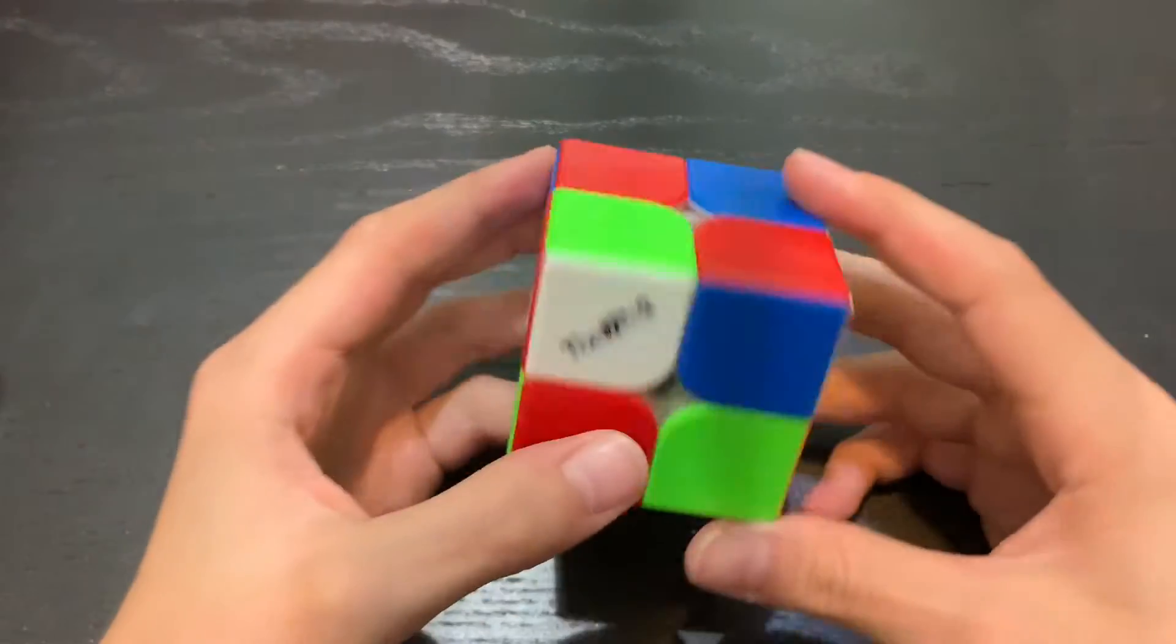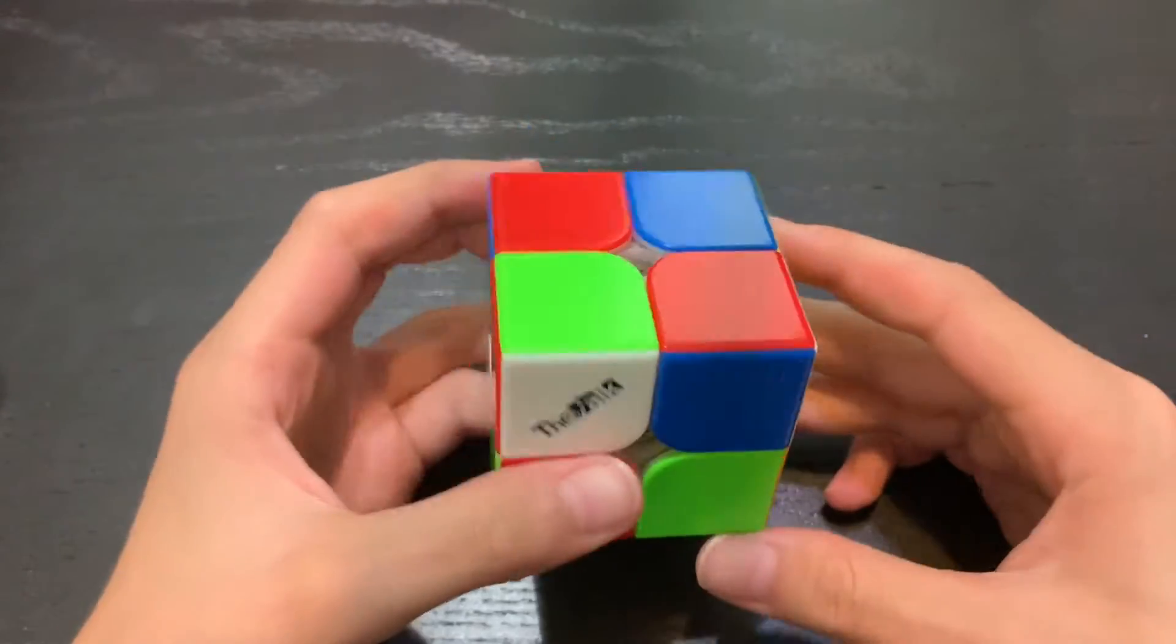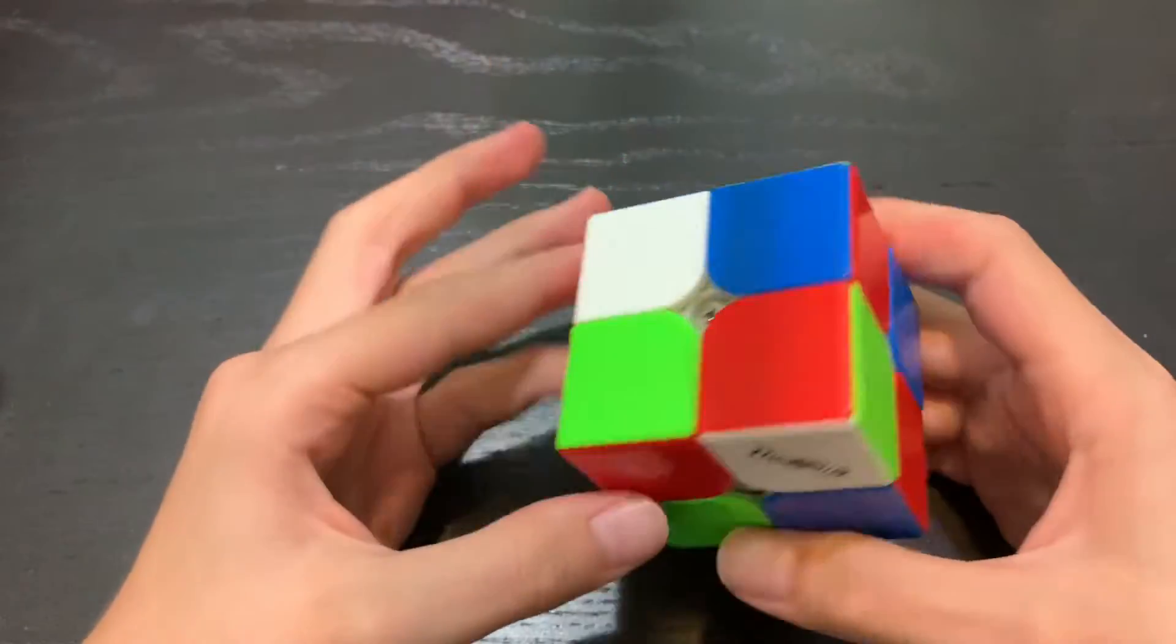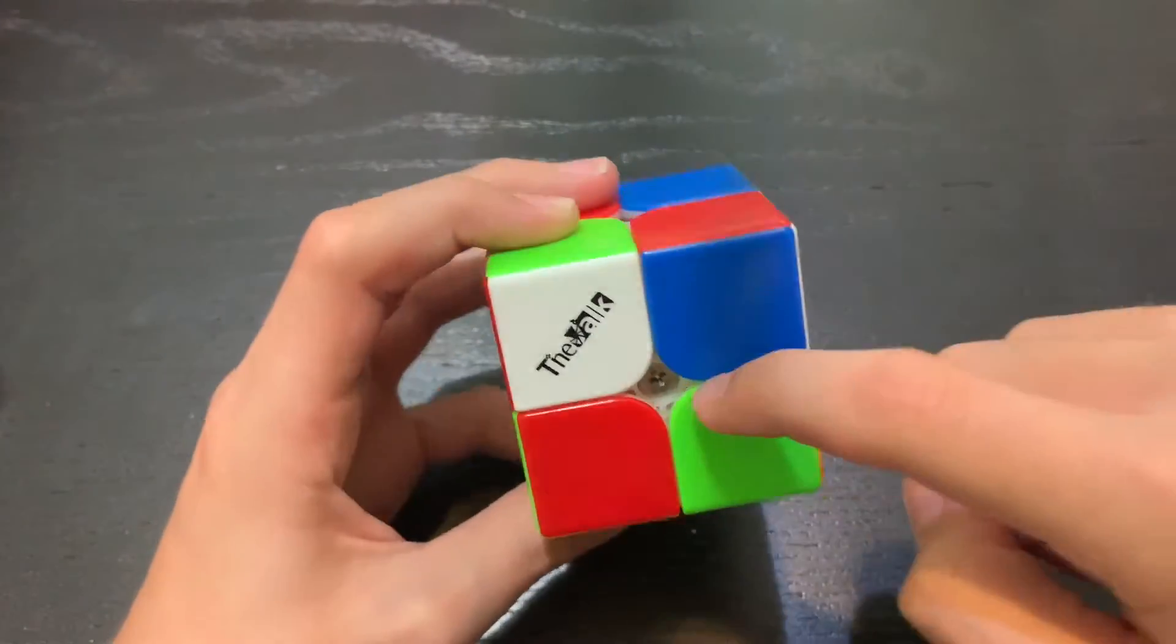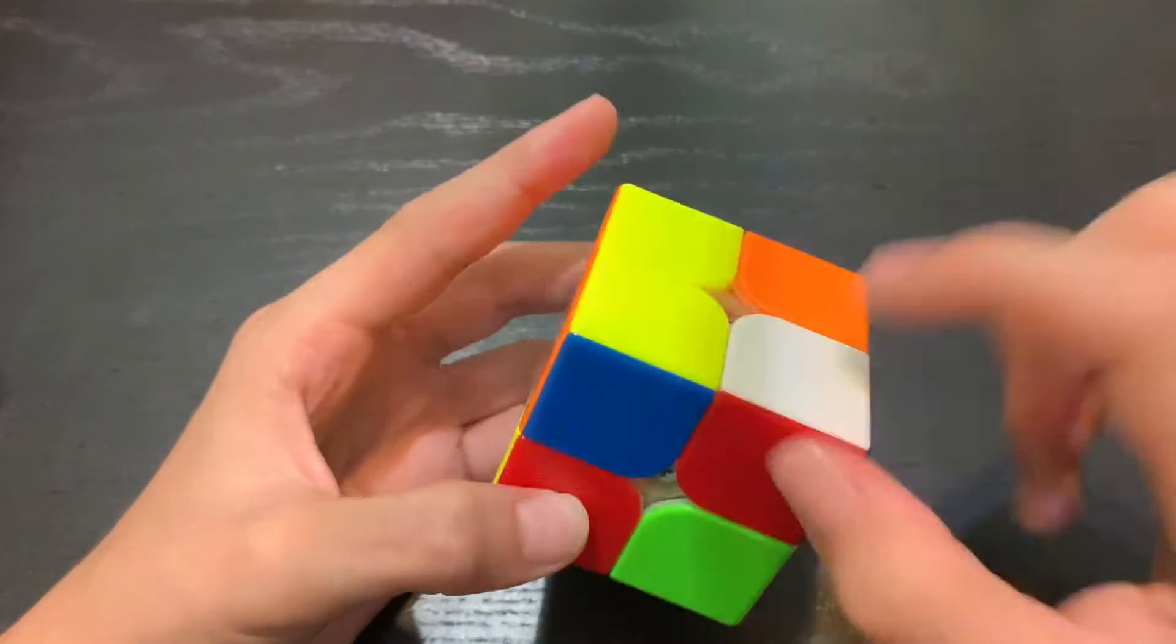Okay, so the first step to solving the 2x2 is solving the first layer. To solve the first layer, you just have to build the white face and the pieces in the correct spots.